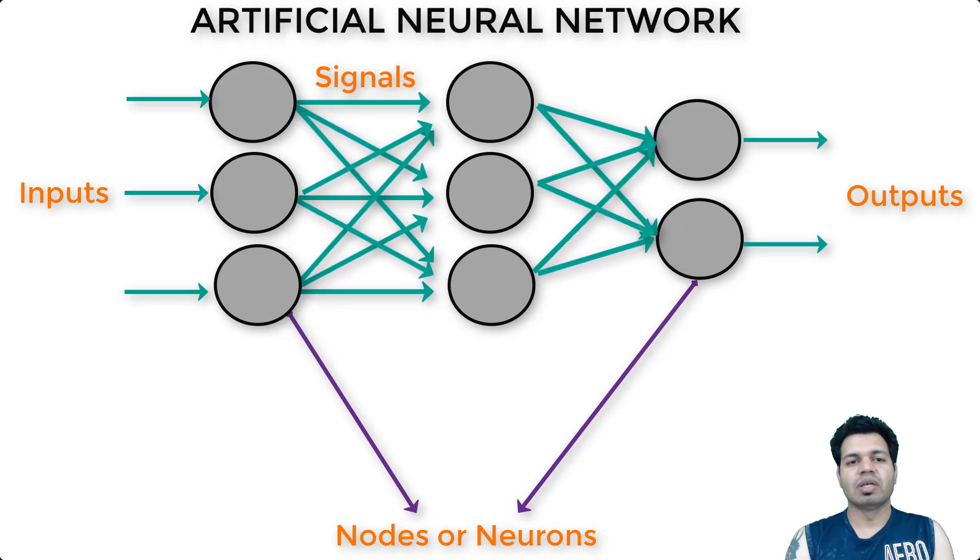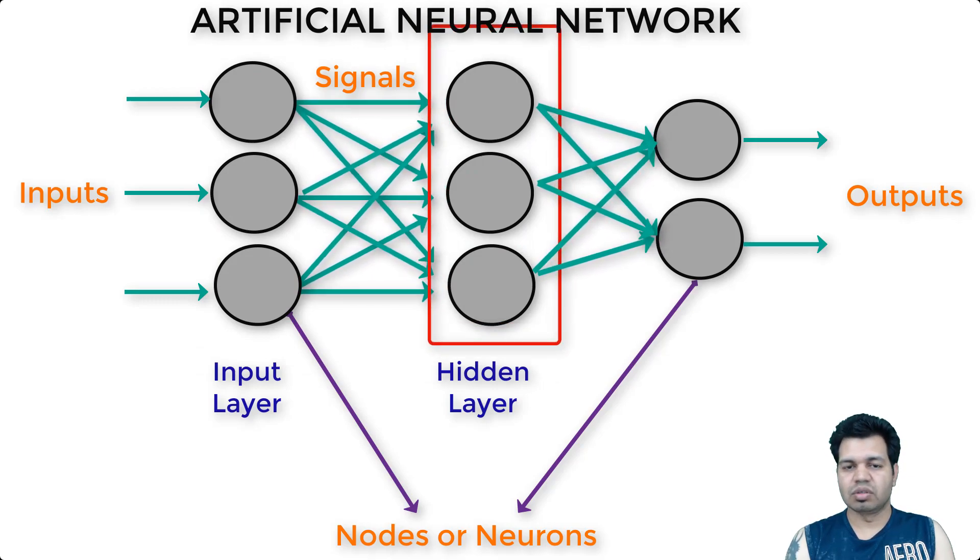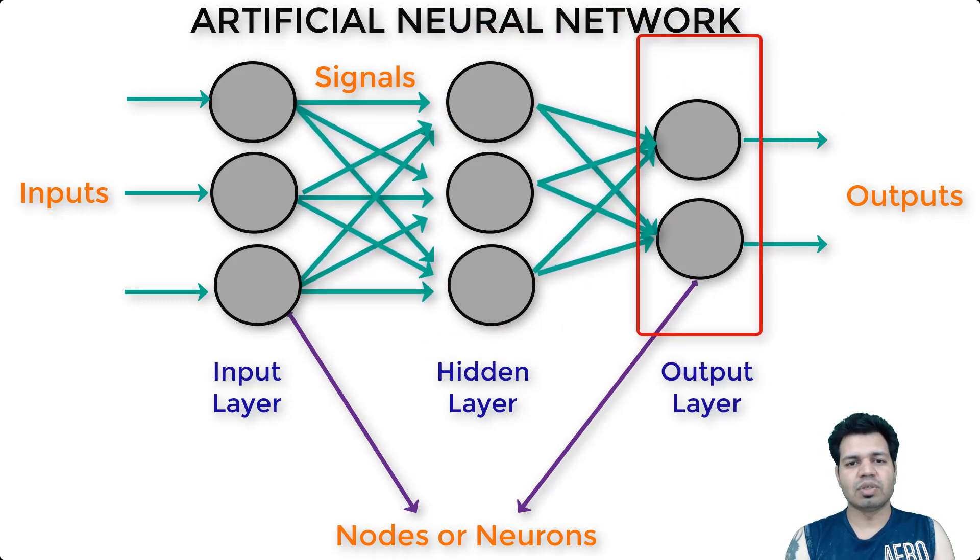These neurons are organized in layers, and each neural network has an input layer, hidden layer or hidden layers depending upon how complex your neural network is, and an output layer. Based on the kind of problem we are trying to solve, different layers can perform different operations on the input, and signals generally travel from input layer to output layer. In between these two layers we can have one or multiple hidden layers, as I told you earlier.